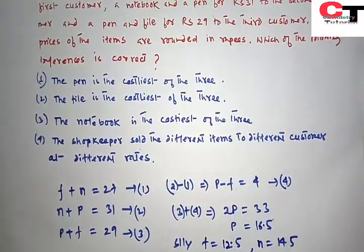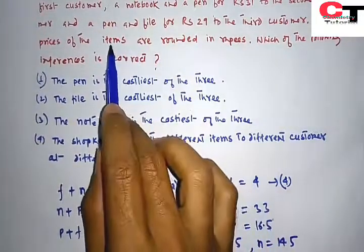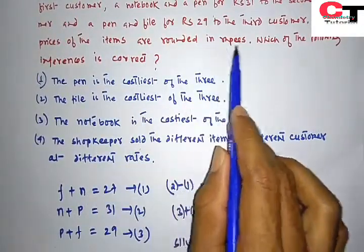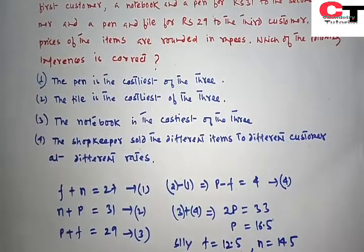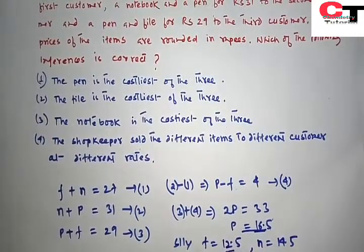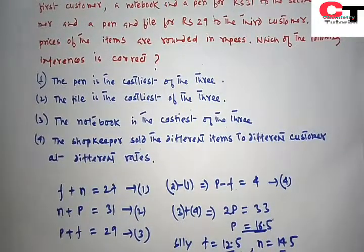Since in the question it is given that all the prices of the items are rounded in rupees, but these prices are not rounded in rupees, therefore prices of the items cannot be predicted from the given information. Let's see the inferences.